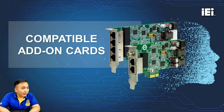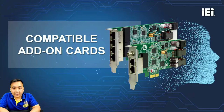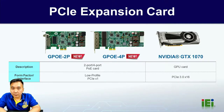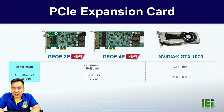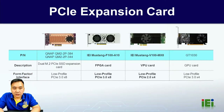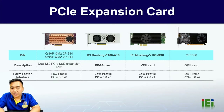Now let's introduce the compatible add-on cards for the REC 500 AI and PEC 400 AI. We have GPOE 2-port and 4-port cards — the 2-port supports up to 60 watts and the 4-port supports up to 90 watts. You can also use NVIDIA GTX cards as GPU cards. Other compatible expansion cards include the QNAP SSD expansion card, IEI Mustang F100 FPGA card, Mustang V100 VPU card, and NVIDIA GPU cards.